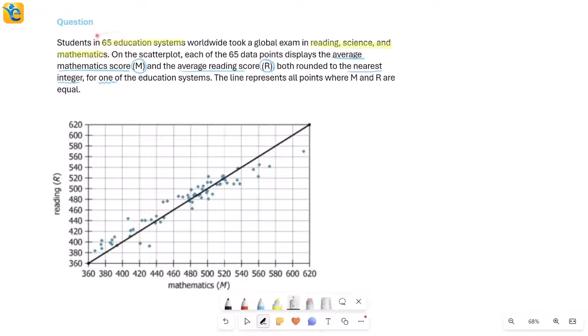Well, 65 education systems and 65 data points means here on the scatter plot, all of these dots that I have - if I count them, I will find that these are 65 dots because each dot represents one of the education systems.